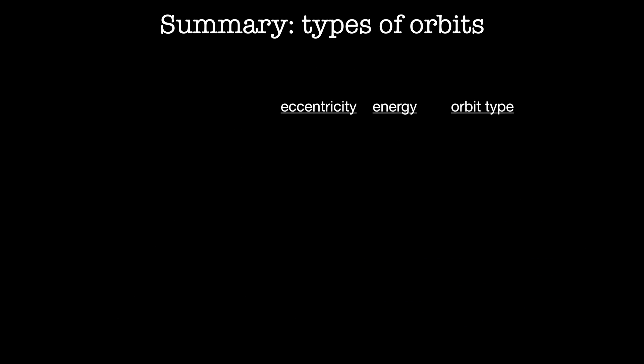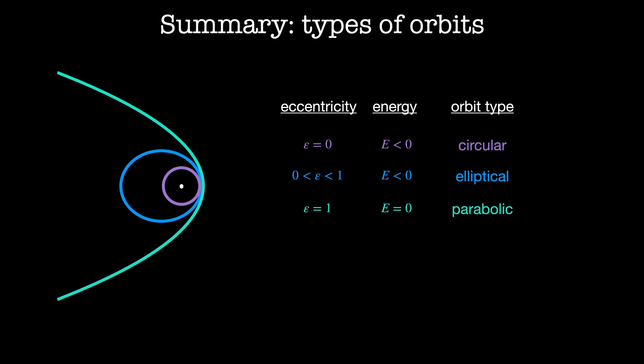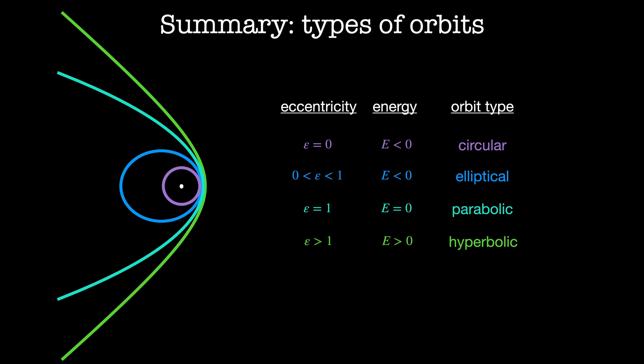To summarize: eccentricity zero gives a circular bound orbit with negative energy; eccentricity between zero and one gives an elliptical orbit with negative energy; eccentricity equal to one gives a parabolic orbit with exactly zero energy; and eccentricity greater than one gives a hyperbolic orbit with positive energy.